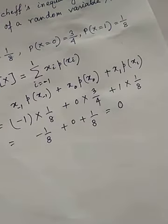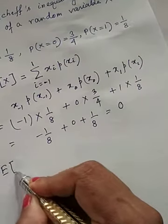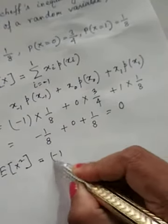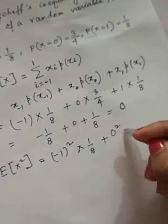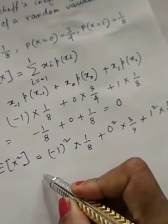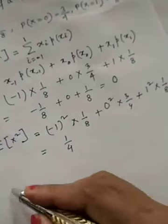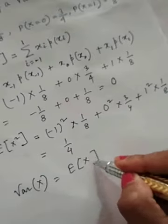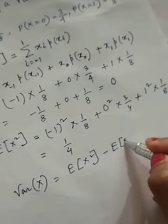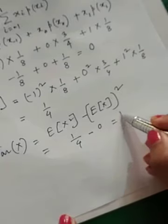Now we have to find E(X²). Similarly, it is (−1)²(1/8) + (0)²(3/4) + (1)²(1/8), which gives us 1/8 + 0 + 1/8 = 2/8 = 1/4. Therefore, variance of x = E(X²) − [E(X)]² = 1/4 − 0 = 1/4.